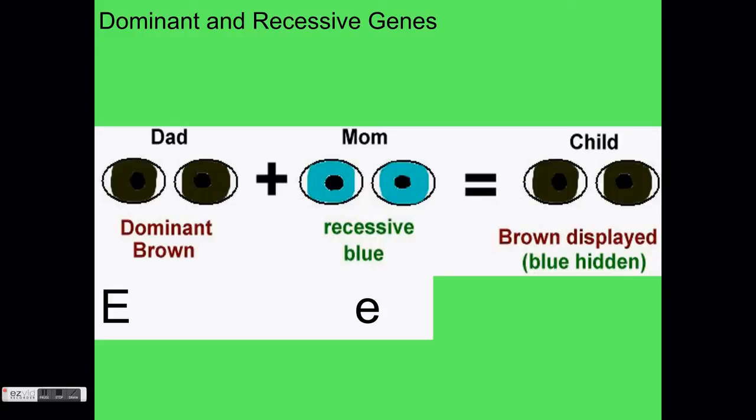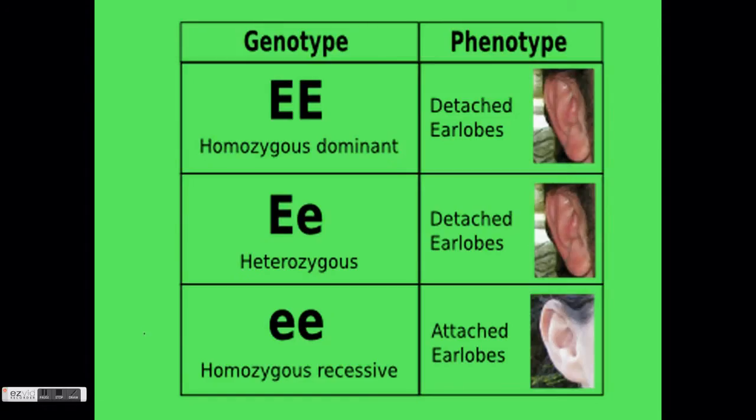A dominant allele is symbolized with a capital letter and a recessive allele is symbolized with a lowercase letter. With 20,000 human genes and only 26 letters, the choice of letter does not matter. Any letter can be used for any gene. Since all humans have two versions of each gene, the letters are always written in pairs. Remember that humans have over 20,000 pairs of genes that each must be considered separately.